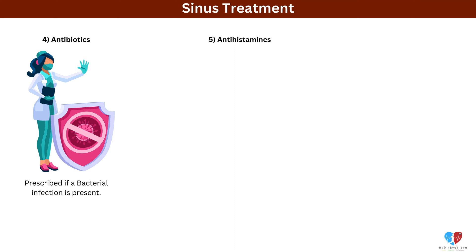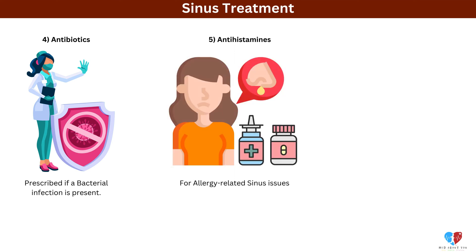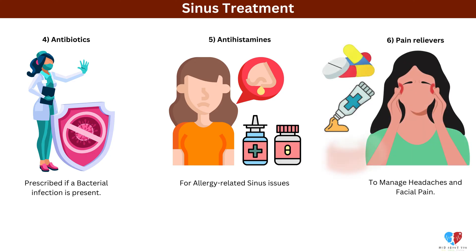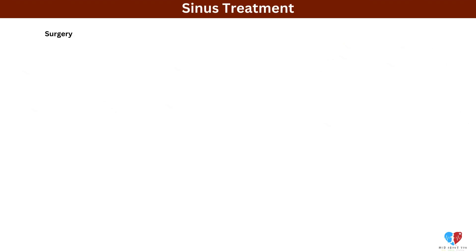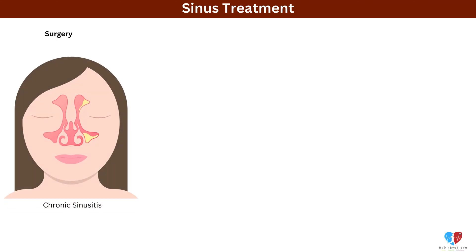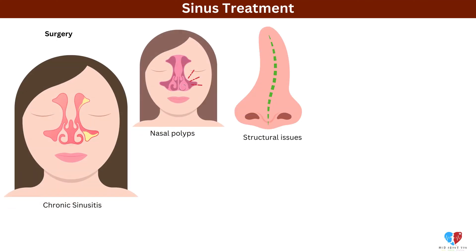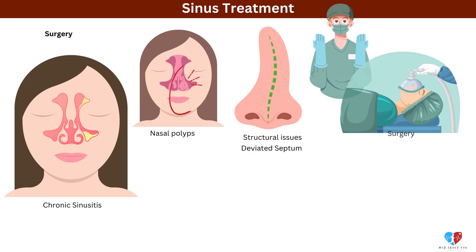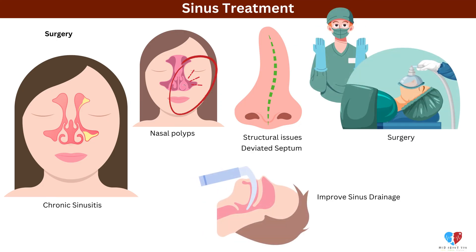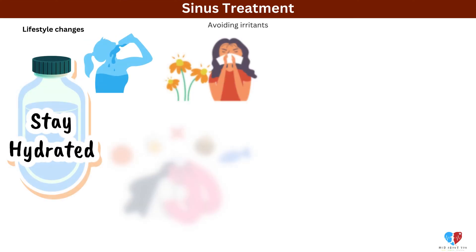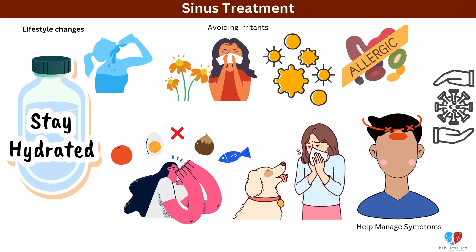5. Antihistamines for allergy-related sinus issues. 6. Pain relievers to manage headaches and facial pain. Surgery — in cases of chronic sinusitis, nasal polyps, or structural issues like a deviated septum, surgery may be needed to improve sinus drainage. Lifestyle changes, such as staying hydrated and avoiding irritants, can also help manage symptoms.